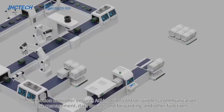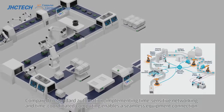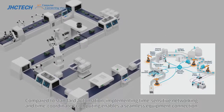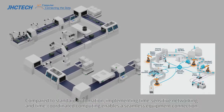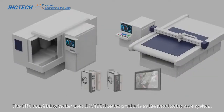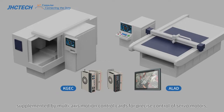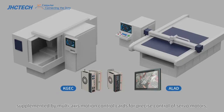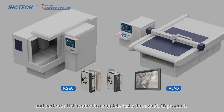Compared to standard automation, implementing time-sensitive networking and time-coordinated computing enables seamless equipment connection. The CNC machining center uses JHC series products as the monitoring core system, supplemented by multi-axis motion control cards for precise control of servo motors, and performs HMI control to complete tasks through ALAD products.